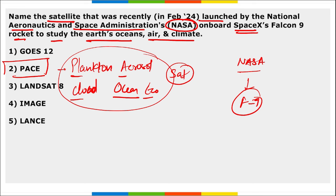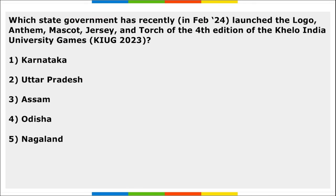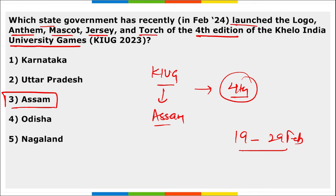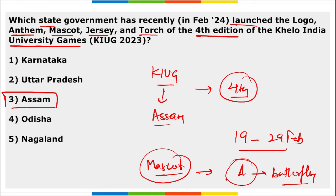Which state government has recently launched the logo, anthem, mascot, jersey, and torch of the fourth edition of Khelo India University Games? The fourth edition of Khelo India University Games will be held in Assam, from 19th to 29th February. The name of the mascot is Asht Lakshmi — Asht Lakshmi is a butterfly. They will be held in Guwahati, Assam.